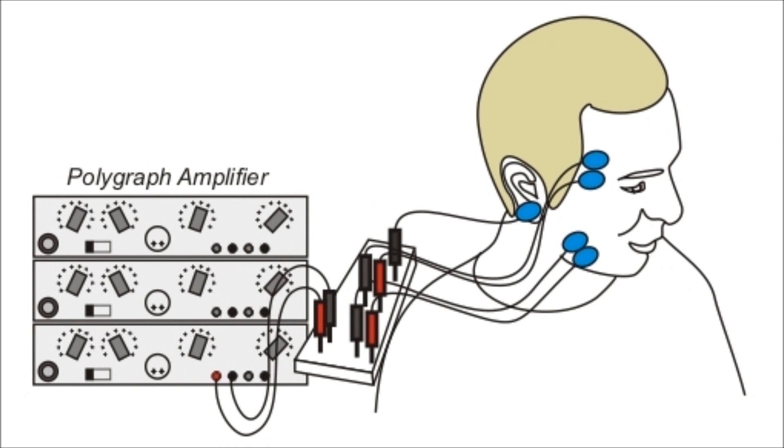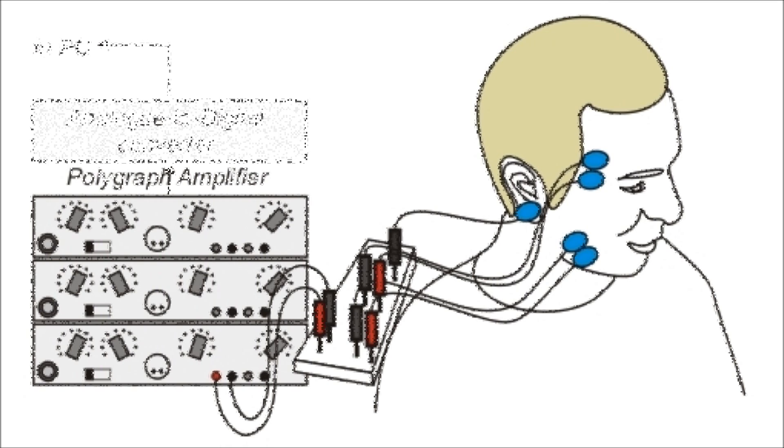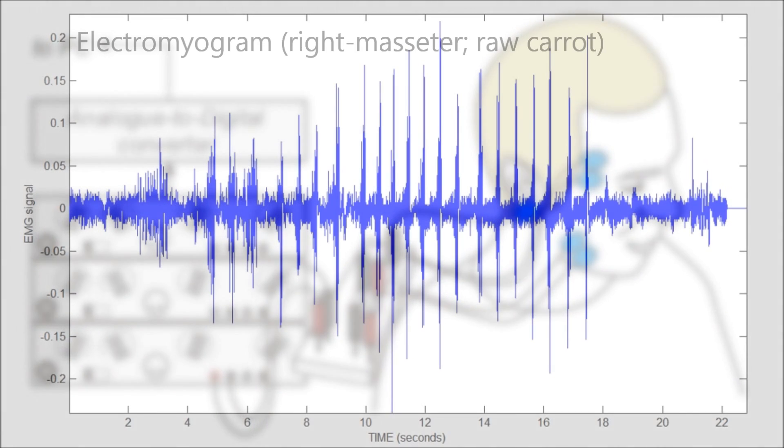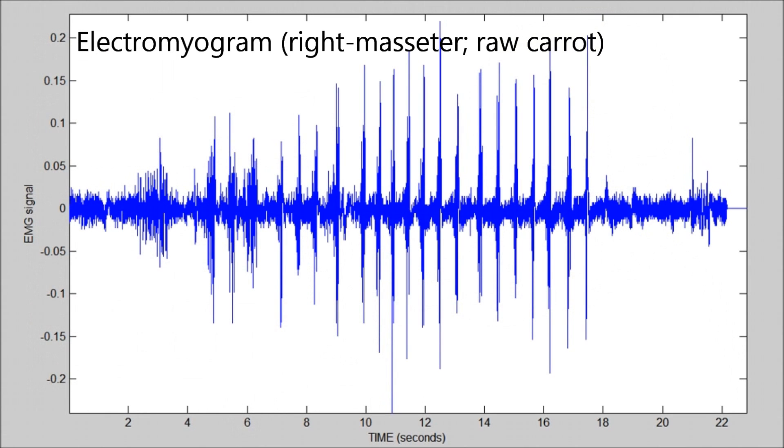Electrical signals generated by muscle activity are extremely small and need to be amplified and measured by a specialist device called a polygraph. With an A to D sampling rate of 1kHz, an electromyogram from eating a single mouthful of food can contain hundreds of thousands of discrete data values.